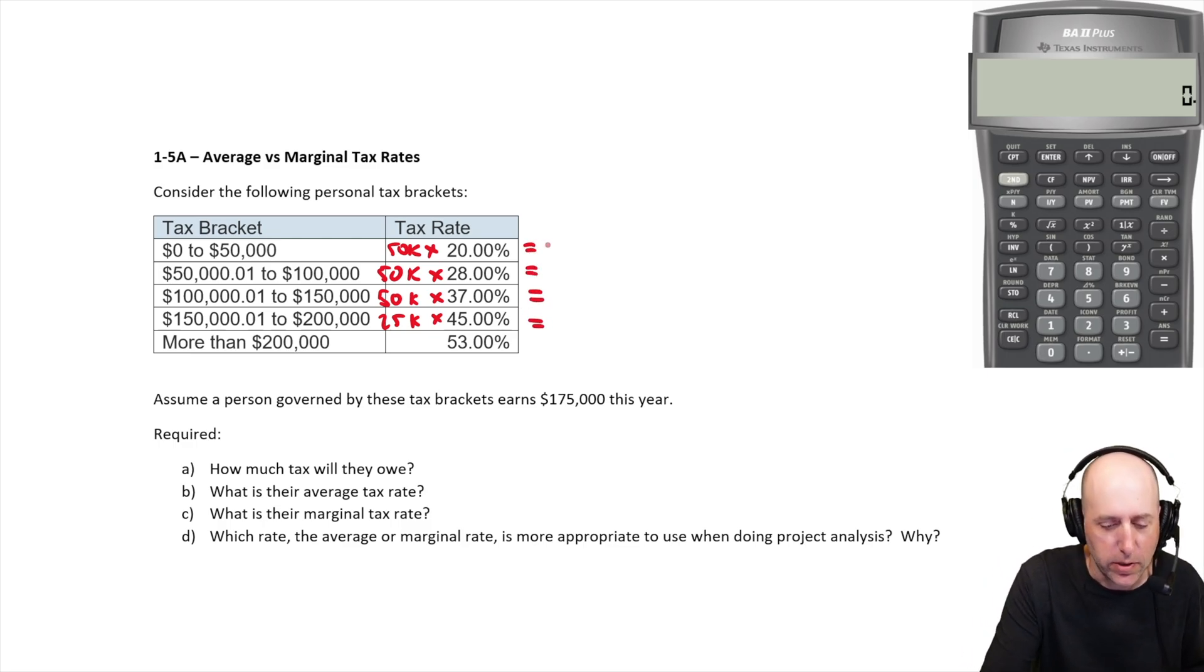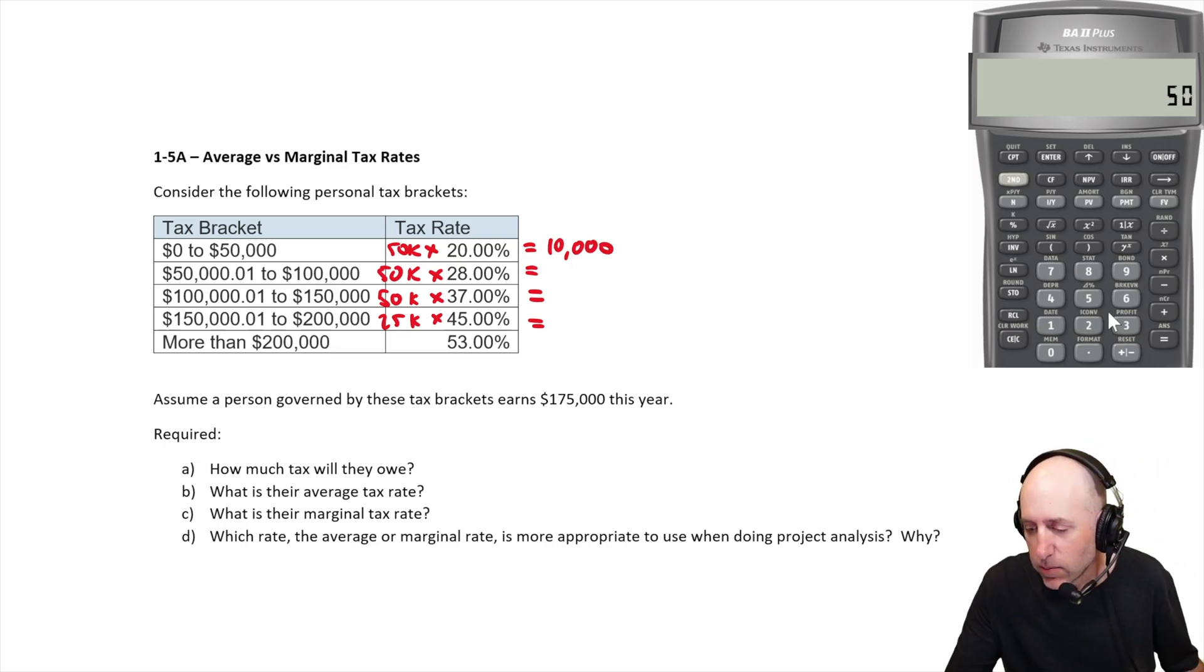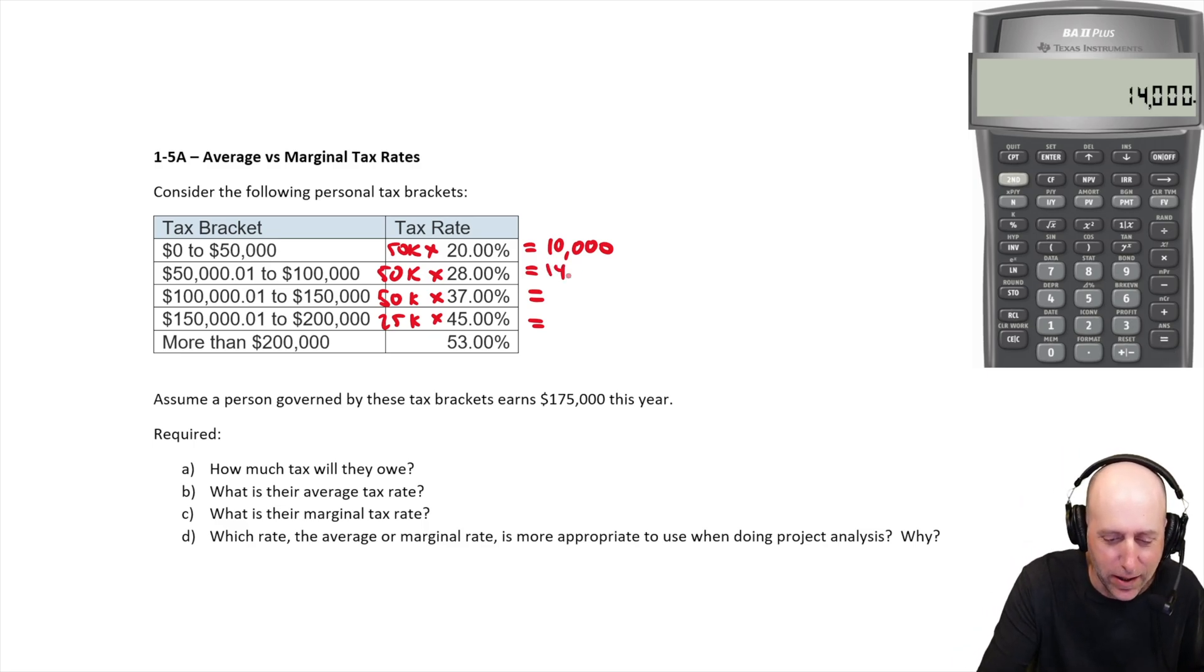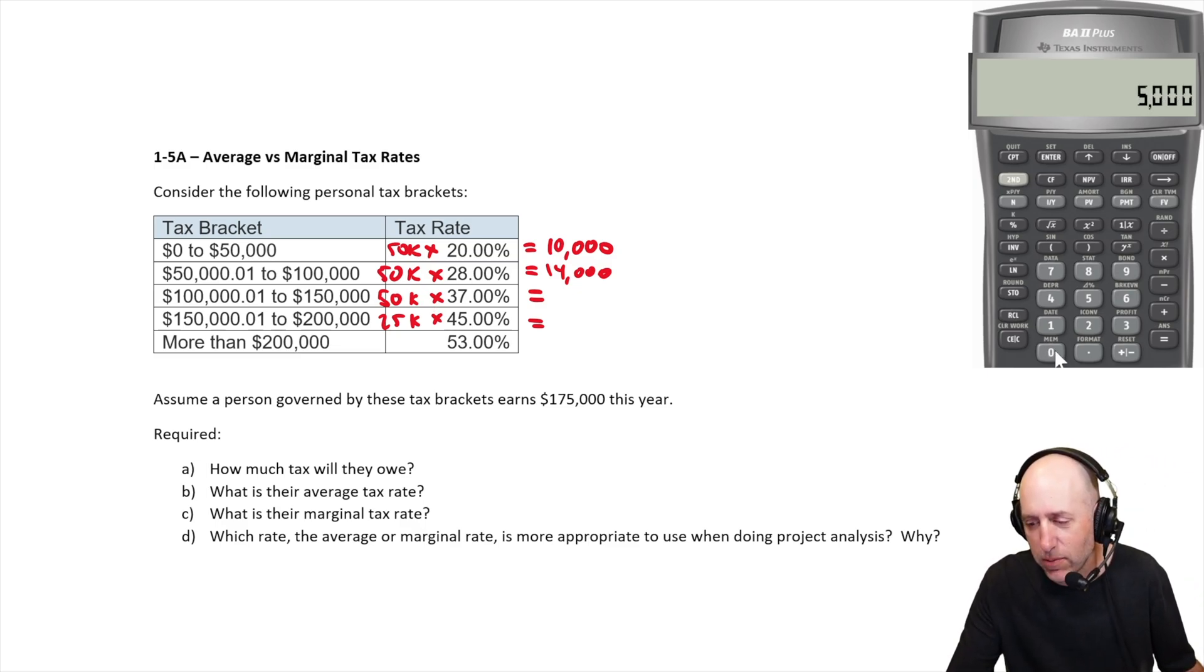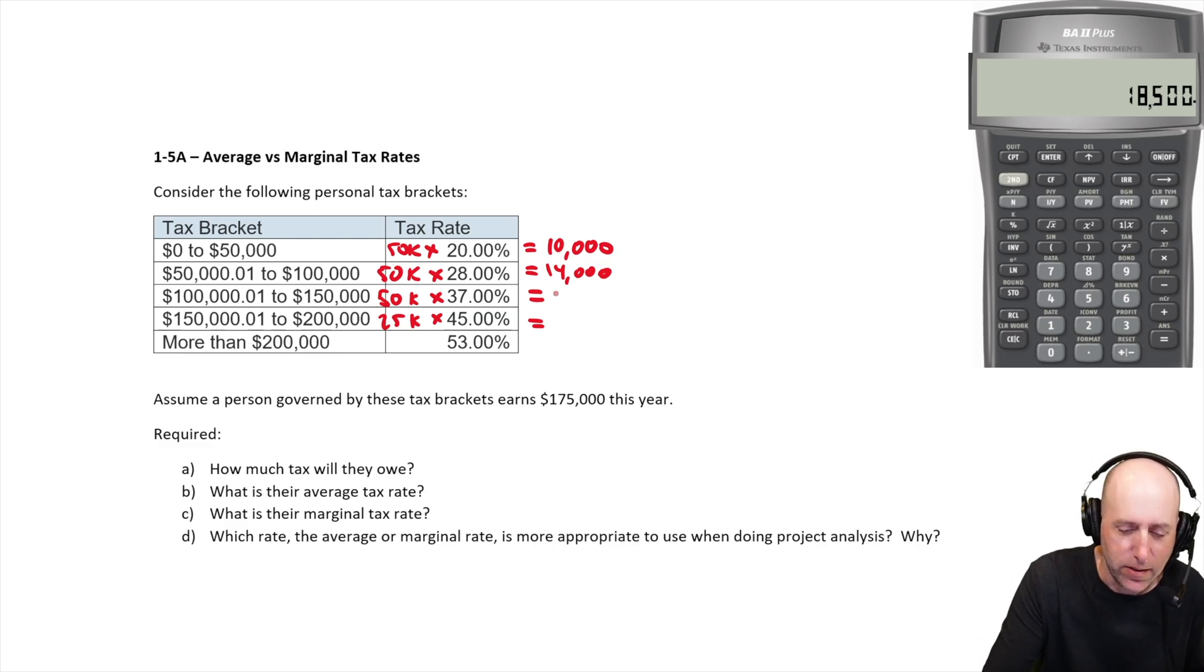50 times 20%, that's $10,000. 50 times 28%, $14,000. I did it quick in my head there. I should have trusted myself. 50 times 37%.